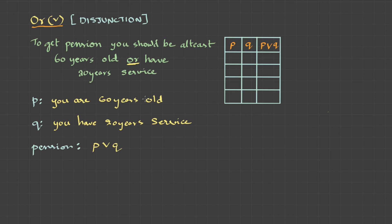What does this mean? So if you satisfy this condition, you get your pension, or if you satisfy this condition, you get it. If you satisfy both, still you get it. Now, when will it fail? If you don't satisfy this as well as this — that's the case where it's going to be false. So if P is false as well as Q is false, it's going to be false. In all other cases, it will be true.